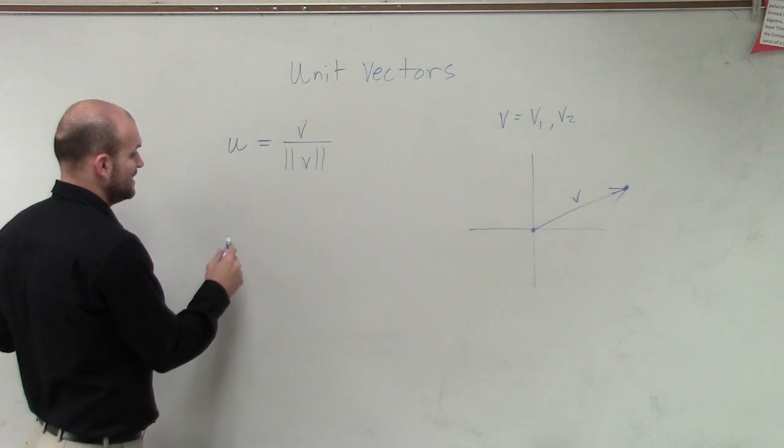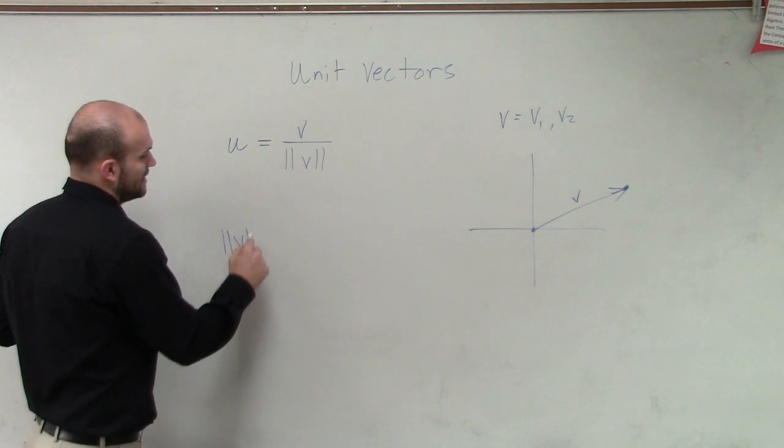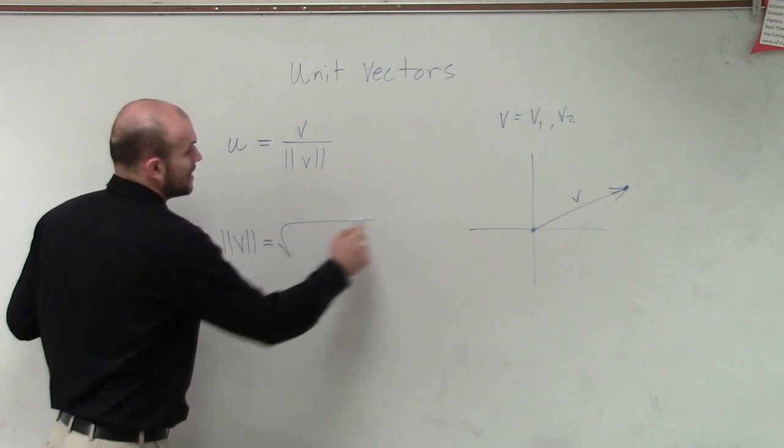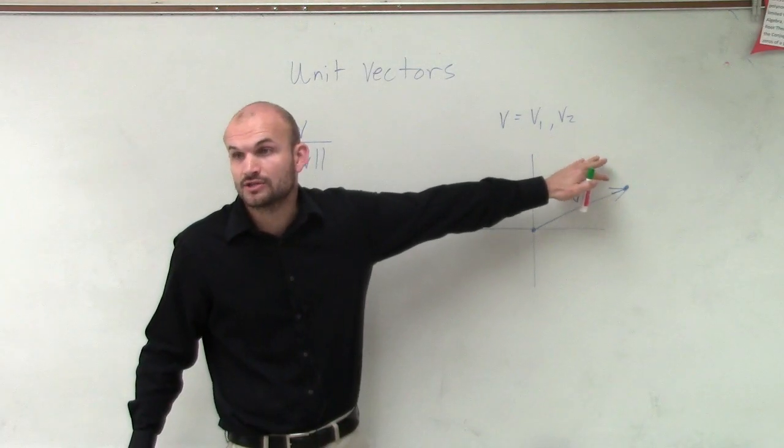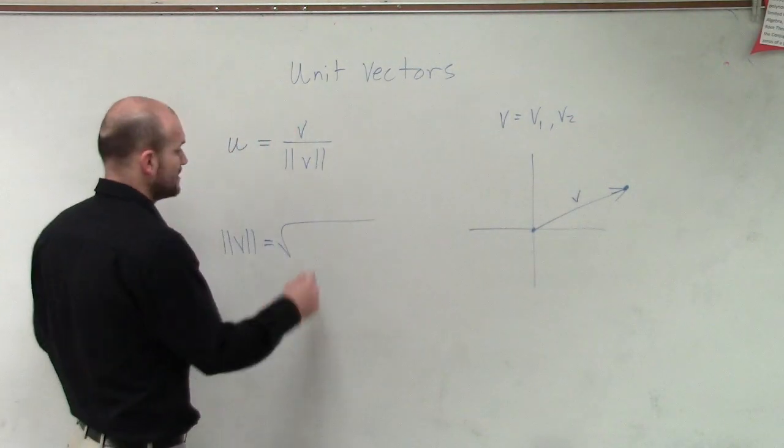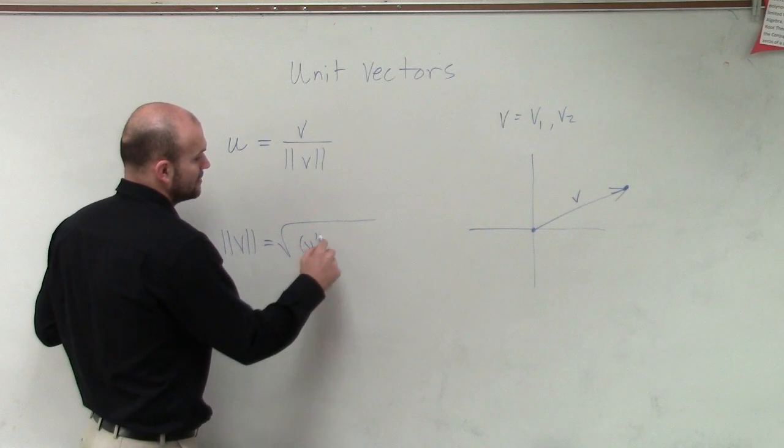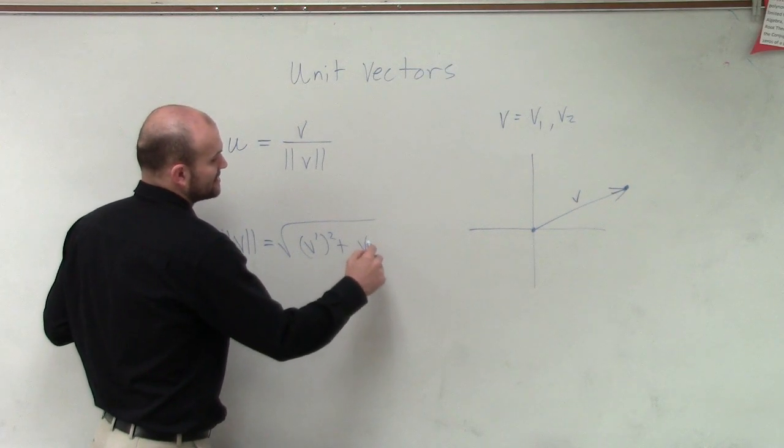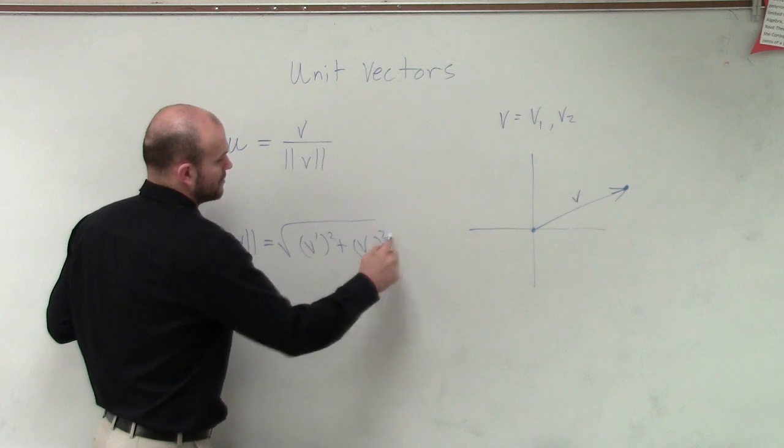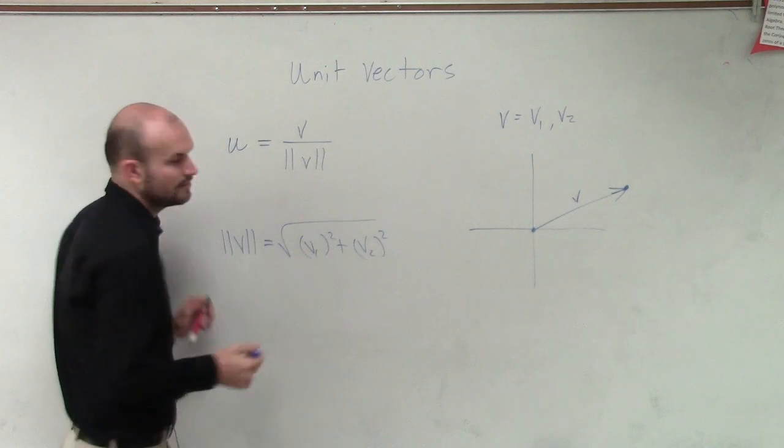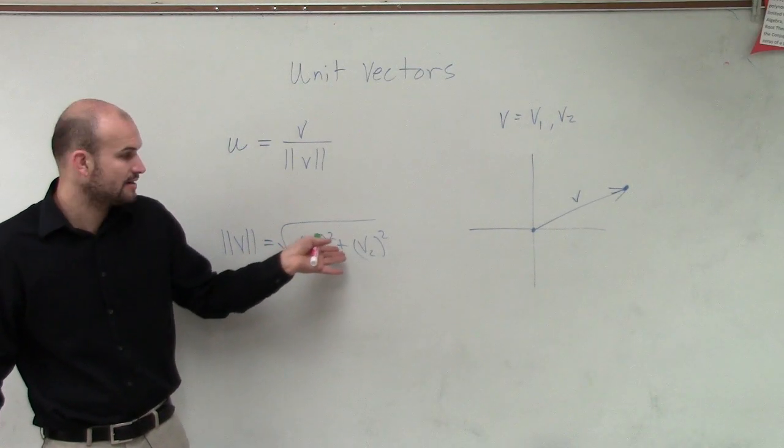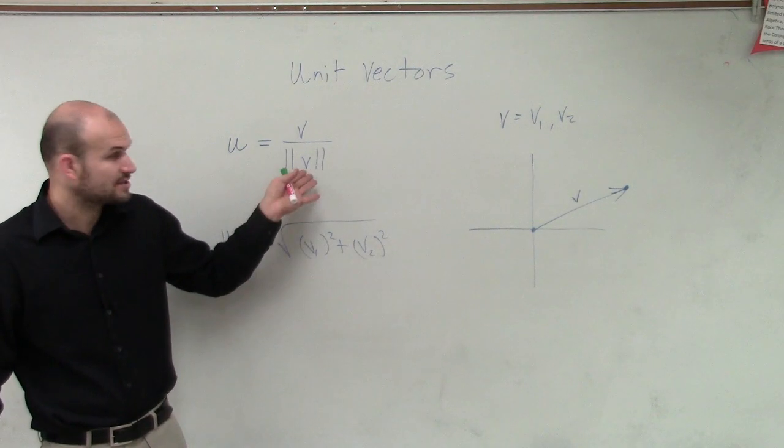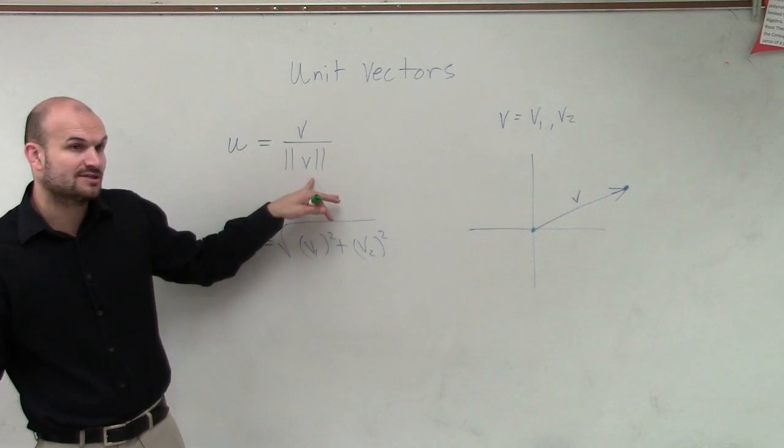The magnitude of v - in this case I'm going to simplify this because now we know what component form is. We know what the component vectors are. Since we have a vector in component form, we could say the magnitude is the square root of v1 squared plus v2 squared. So that's going to be your magnitude.